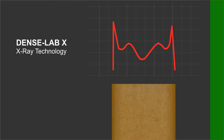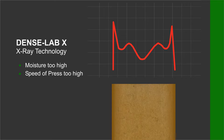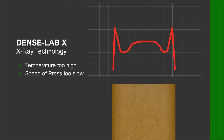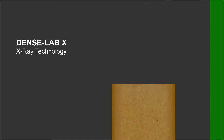This density profile indicates that the fibers had too much moisture and/or that the press speed was too high. Here, the temperature was too high and/or the speed of the press was too slow.